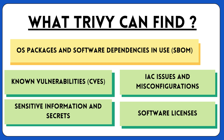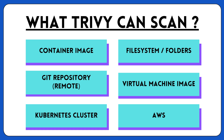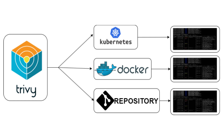Trivy can be integrated with different things. It can be used over a container image, file system directly, and we can scan a GitHub repository directly. We can scan a Kubernetes cluster, AWS, and VM images as well. In this video I will show you the complete process from scratch — installing Trivy on your system, then using Trivy to scan a Docker image, Kubernetes cluster, GitHub repository, and a proper project. Make sure to watch the video and follow the steps from the description.